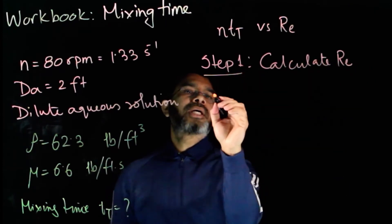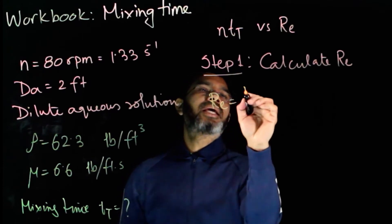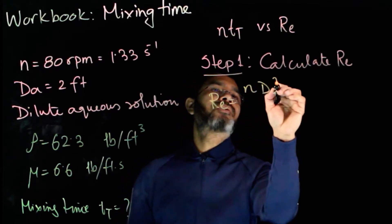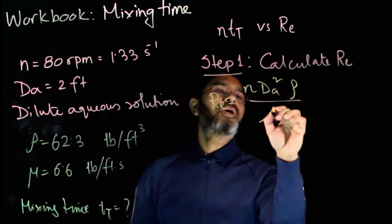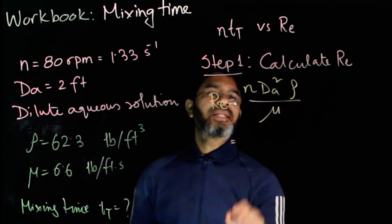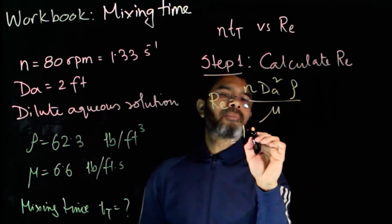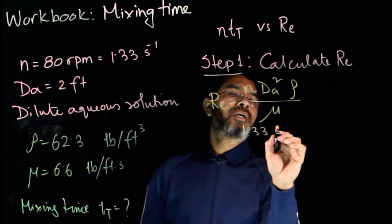We know that Reynolds number is given as Re = n × Da² × ρ / μ. Simply plug in these values: 1.33 per second.